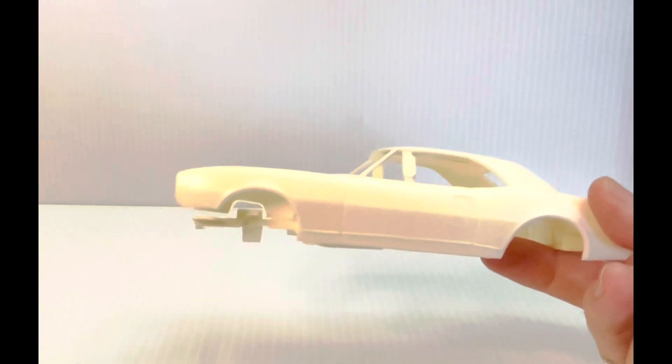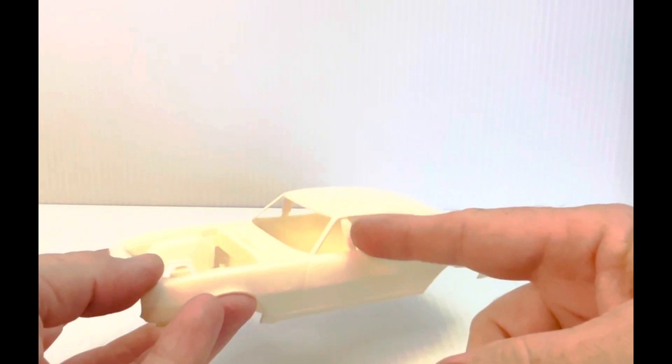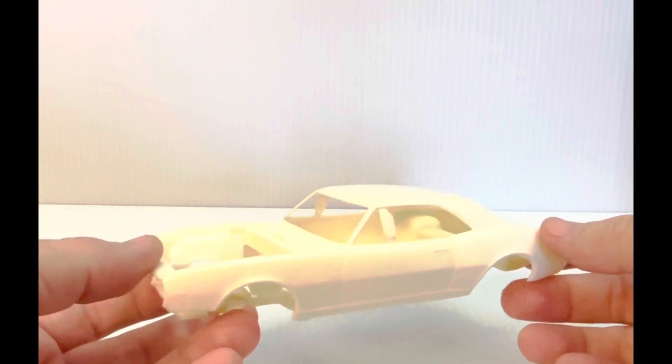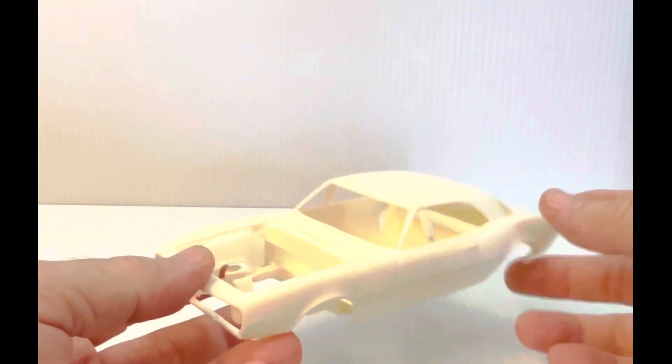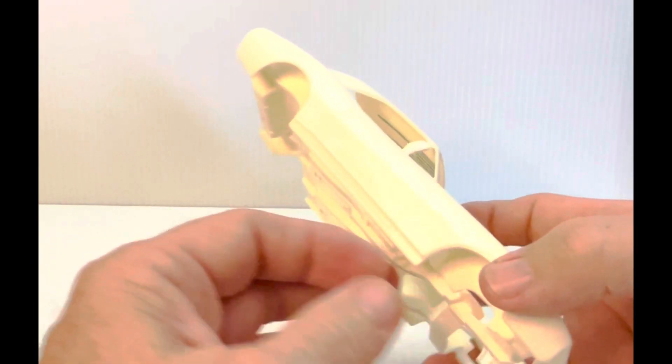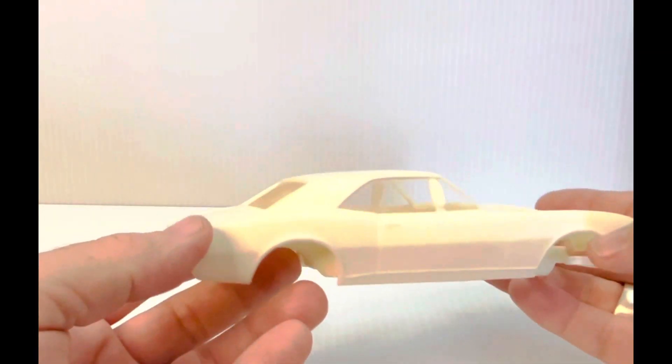Alright, so let's look at the body here. Here's the body. Almost looks like a '67 with that little support in there for the vent window, but that's just I guess to help protect the A-pillar. Body lines look great.